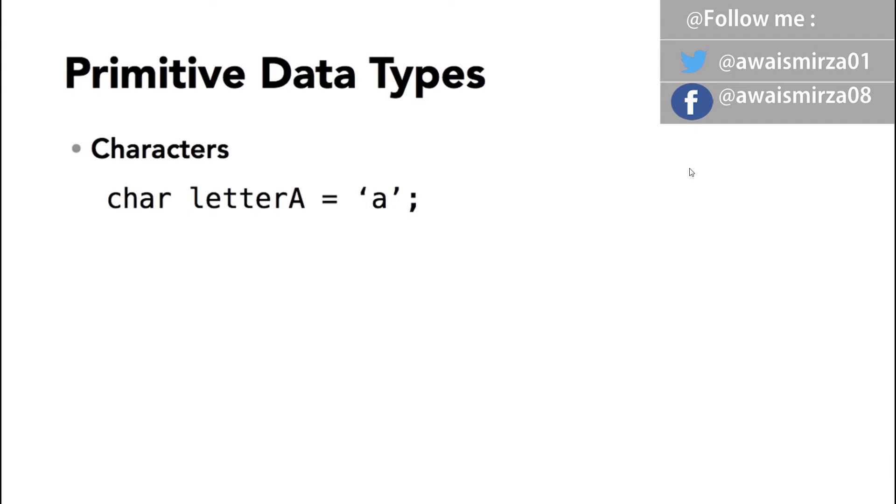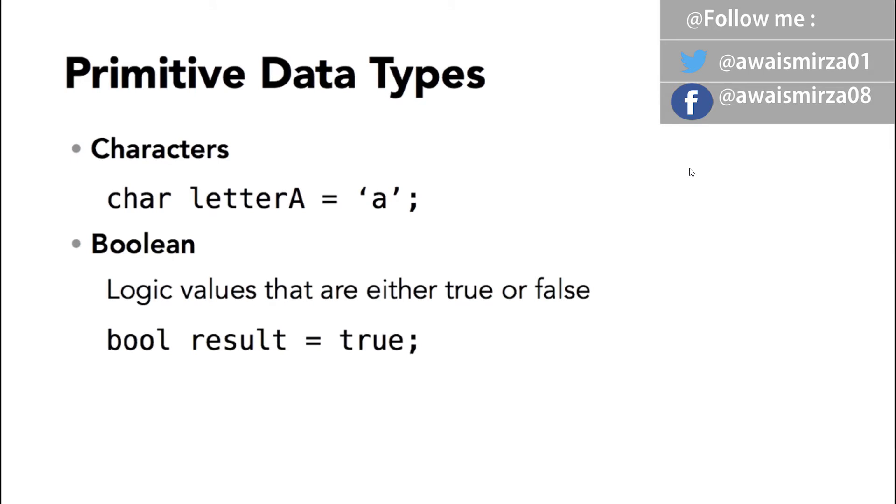Next, we have a variable type called Boolean, which is named after famous mathematician George Boole. It allows us to store a value of true or false. The Java syntax is bool. The variable name such as result equals either true or false.